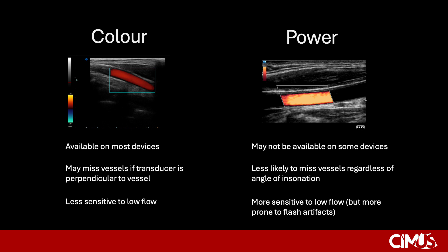Lastly, color Doppler is less sensitive to low flow and thus may miss low-flow vessels, whereas power Doppler is more sensitive to low flow and thus is often the modality of choice when identifying vessels prior to procedures such as thoracentesis and paracentesis, as these are typically low-flow vessels. However, given its sensitivity, power Doppler is very prone to flash artifacts and therefore requires a very steady hand.